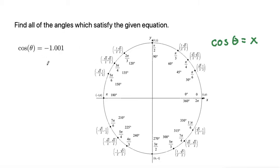So since this problem is asking for the cosine of an angle that is something less or a larger negative than negative 1, that means that there is no solution. Or there is no angle that when we take the cosine of it that it will give us negative 1.001.